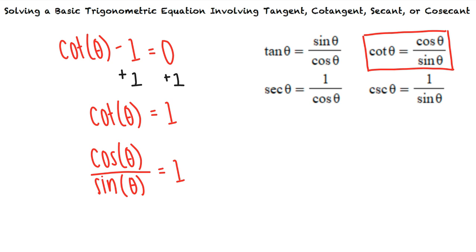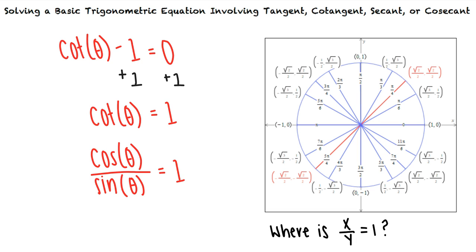We can look at the unit circle and consider for each angle the ratio of the x value, cosine, to the y value, sine. We see that in the interval from 0 to 2 pi, the equation is satisfied by exactly two angles: theta equals pi-fourths and theta equals 5 pi-fourths.